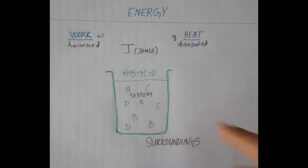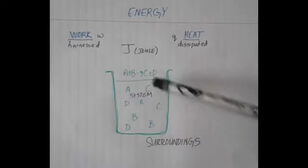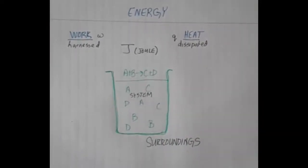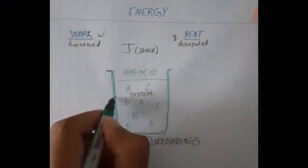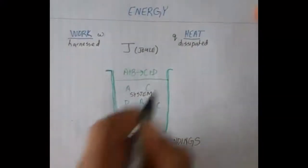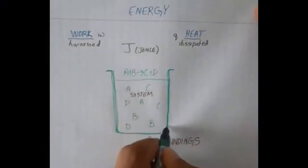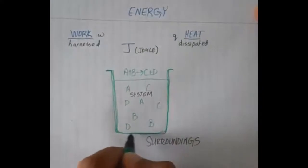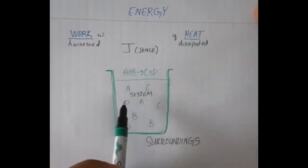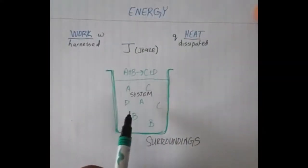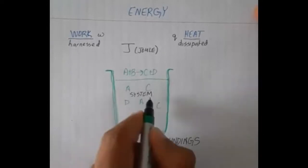Now take a look at this hypothetical reaction drawn here. We have reactants A plus B going to products C and D, housed inside a beaker. The beaker is highlighted in green. The reactants and products — A, B, C, and D — we can call that the system.